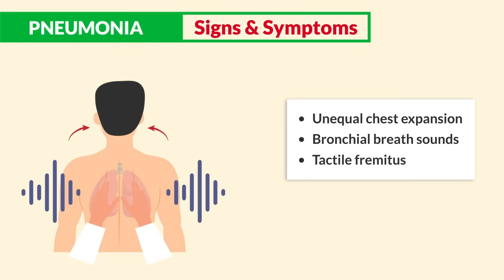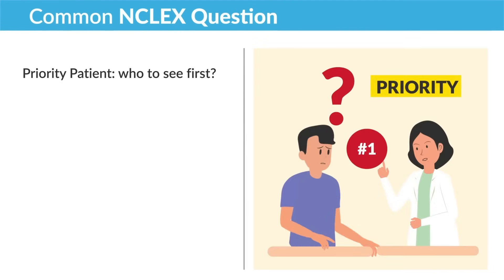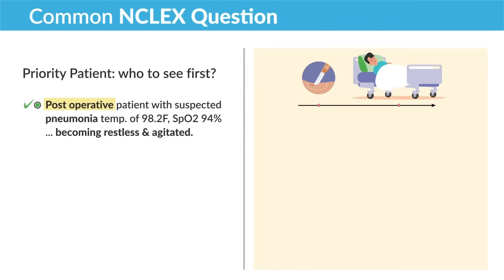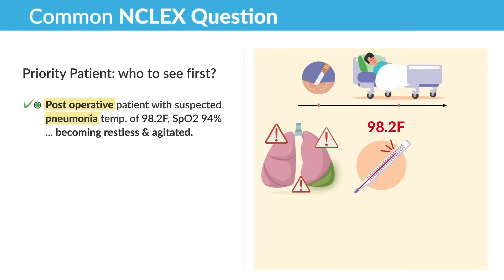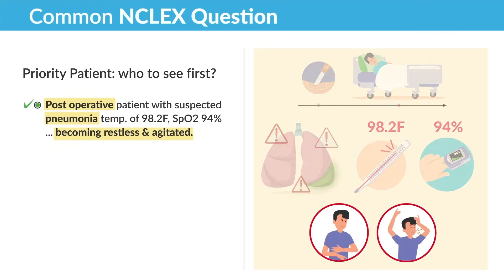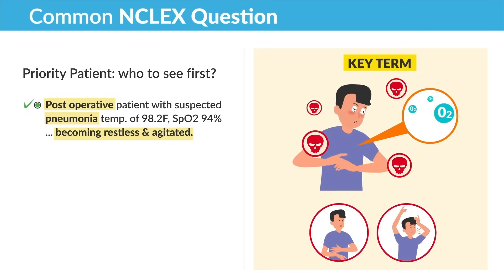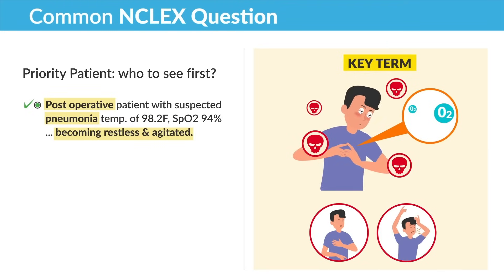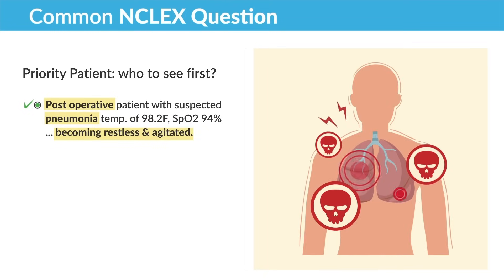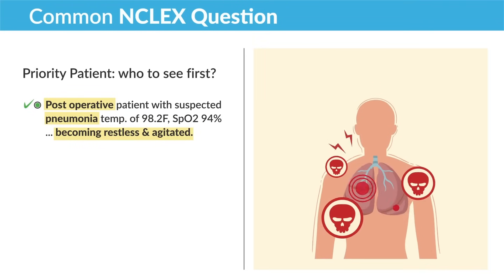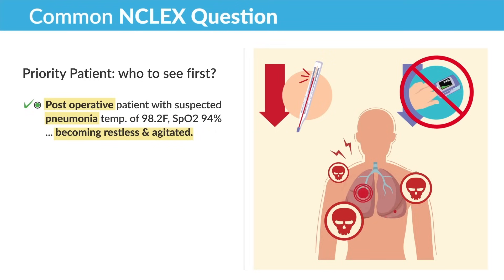Tactile fremitus presents as more vibrations from a patient's back when repeating certain phrases, indicating denser or inflamed lung tissue. A common NCLEX question: priority patient — who to see first? A post-operative patient with suspected pneumonia with a normal temperature and SPO2 of 94% but becoming restless and agitated. Anytime you see the word post-op or post-operative, think the worst-case scenario: acute respiratory failure, even if temperature is not elevated and oxygen saturation is not drastically low. Just look for the key terms: restless and agitated.